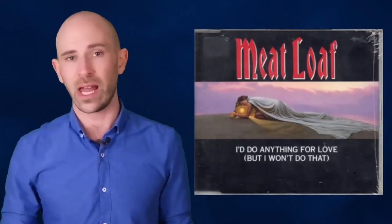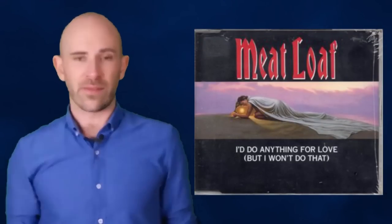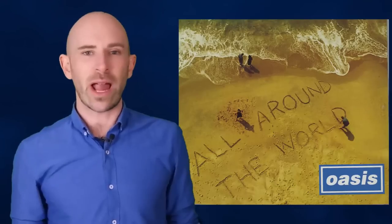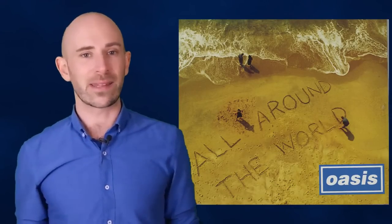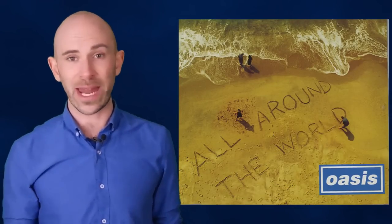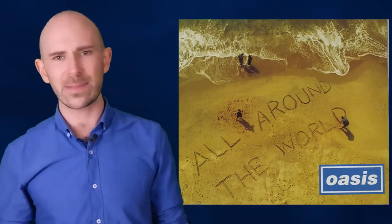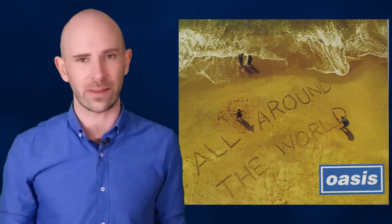Hey Jude by The Beatles, 7 minutes and 11 seconds, I'll Do Anything For Love But I Won't Do That by Meatloaf, 7 minutes and 58 seconds, and All Around the World by Oasis, 9 minutes and 38 seconds, are all songs that have managed to squeak their way onto the charts despite being about twice the length of most other pop songs.